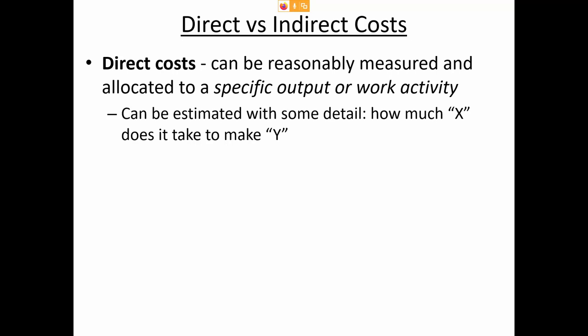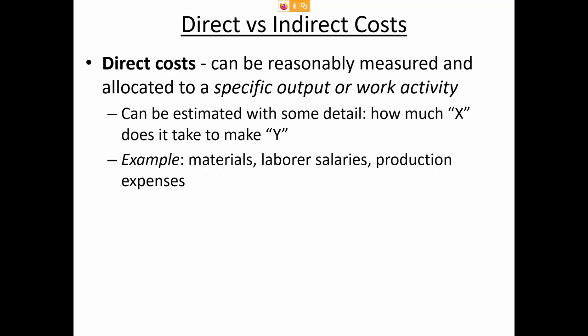Understanding those costs can be aided by breaking them into categories. Direct costs are those you can specifically allocate to a certain work activity — if you can answer 'how much of one thing does it cost to make another,' that may be a direct cost. Using a Twinkies factory as an example: how much sugar is required to make a thousand Twinkies? Sugar is a direct cost because it's specifically tied to a certain level of output. Common direct costs include materials, the salary of hourly laborers, and production expenses.